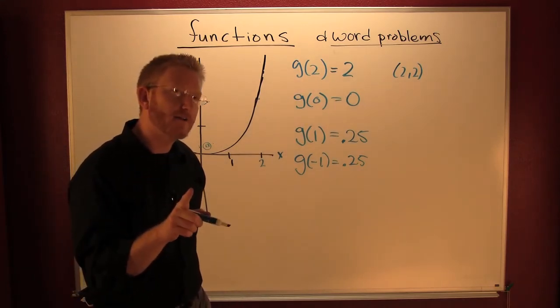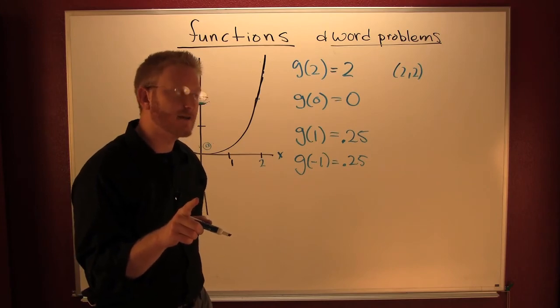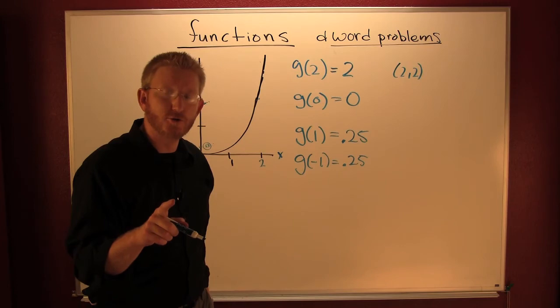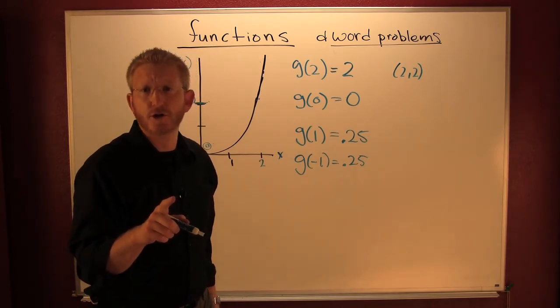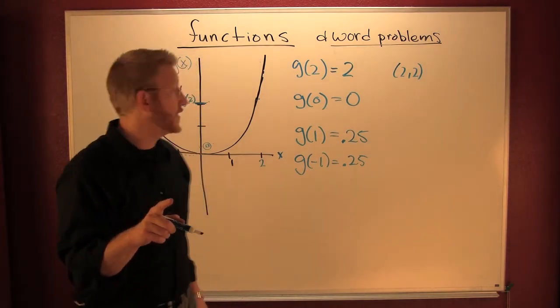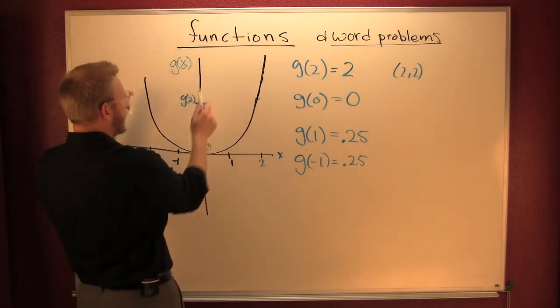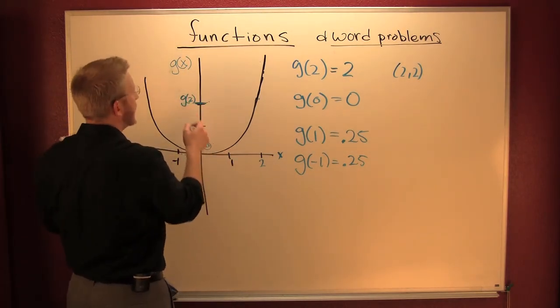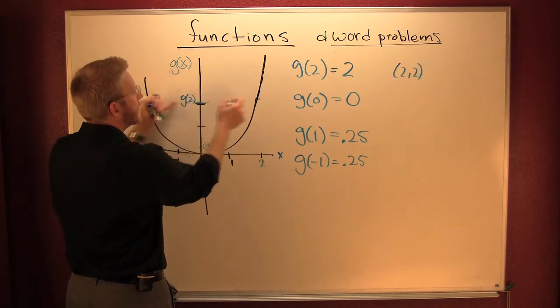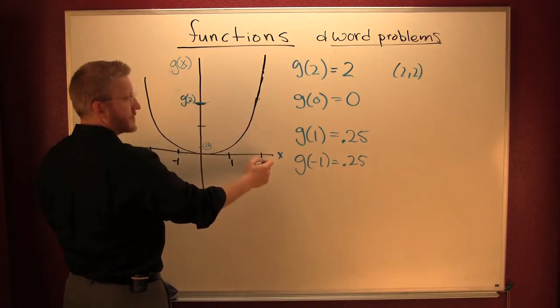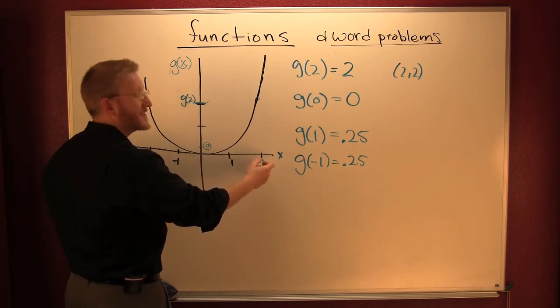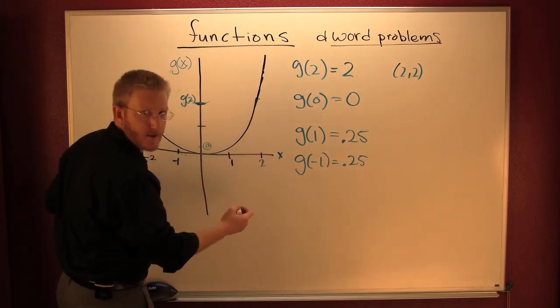You can also go backwards, but I don't think your book asks you to do that. Maybe they ask 'find the x value that makes G of x equal to two.' It's two - you go here, find those, and it returns two values. This one isn't a function the other way around - it's not one-to-one, but we'll get to all that.